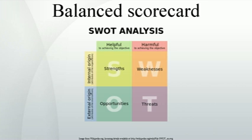The roots of these four perspectives can be seen in General Electric's measures for GE's decentralized business units, as pointed out by Kaplan. GE recommended one financial and seven non-financial metrics. GE's recommended performance measures from the 1950s included: profitability (financial perspective), market share (customer perspective), productivity and product leadership (internal business process), public responsibility (internal business process), personnel development and employee attitudes (learning and growth), and balance between short and long range (the essence of the balanced scorecard).